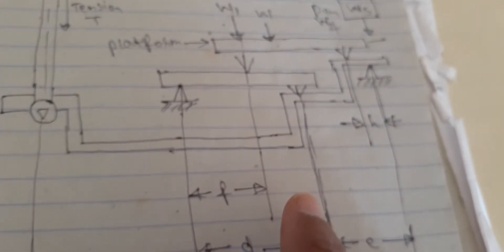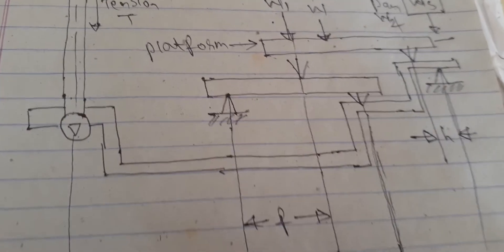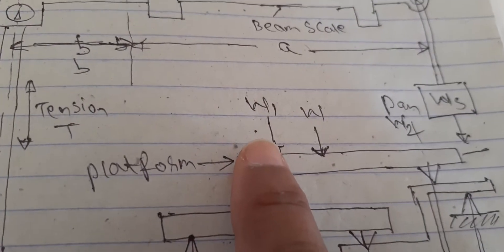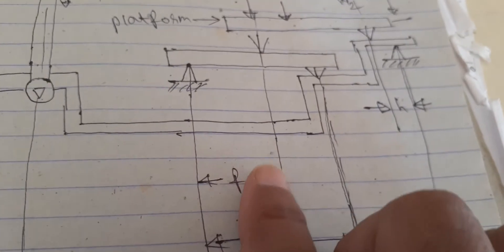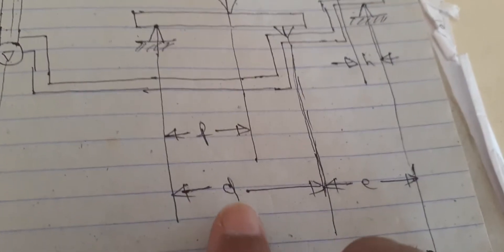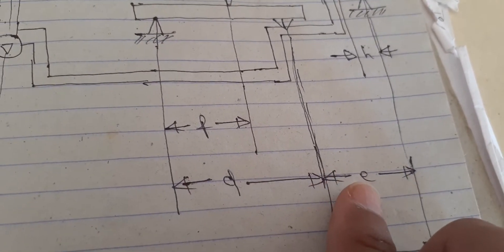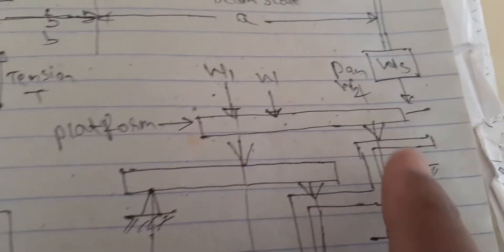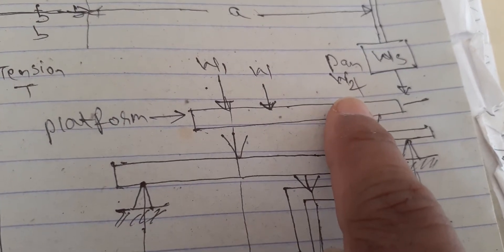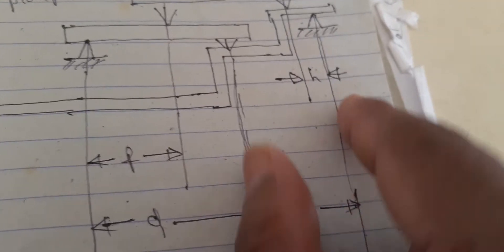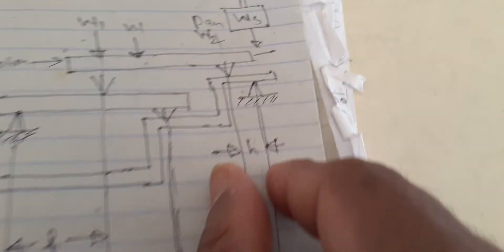How it comes? Tension T into this whole length c equals W1 arbitrary weight W1 into this length f by d into e plus arbitrary weight W2 into this h length h. That is second equation.